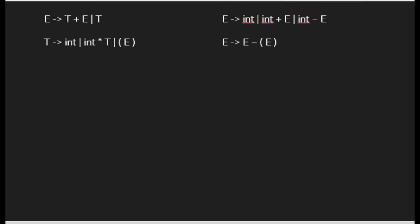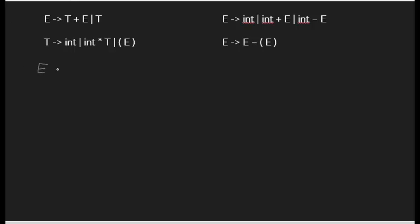For example: E goes to T plus E or T, and T is the common left factor. So we apply the rule — alpha is T, and the remaining parts are plus E and epsilon. Result: E goes to T E-prime, and E-prime goes to plus E or epsilon.